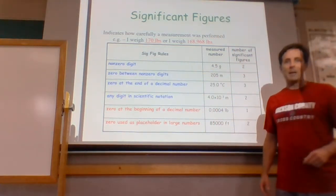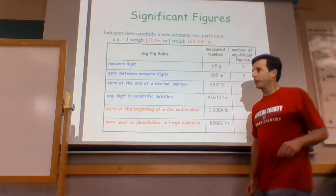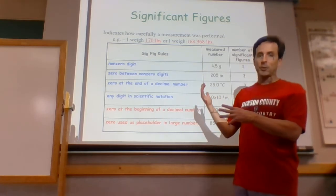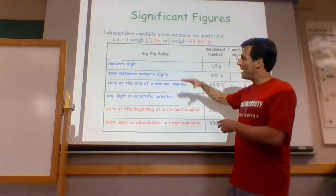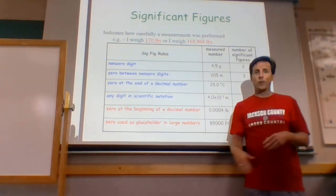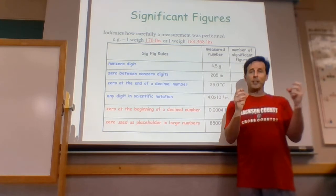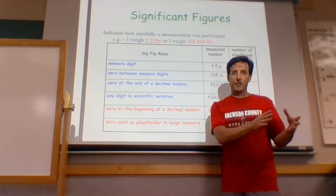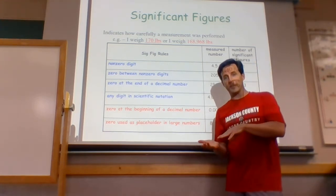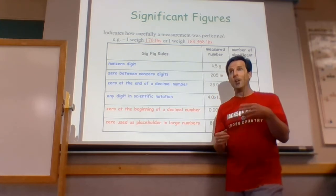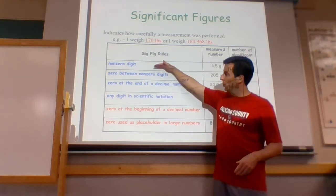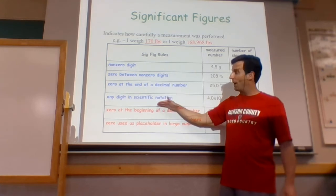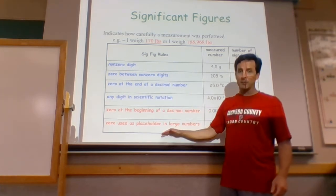We're up to part four of the chapter one PowerPoint, getting into the sig fig rules. This chart tells us which digits are going to be counted as significant figures and which ones are not. The blue ones are the significant figures; the red ones are not sig figs.